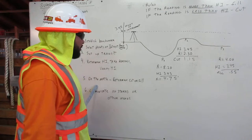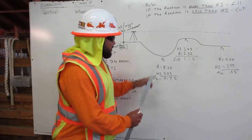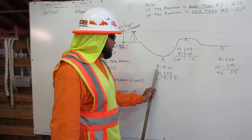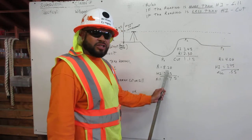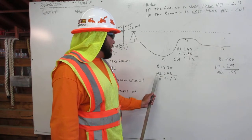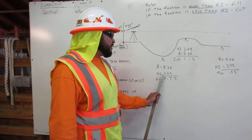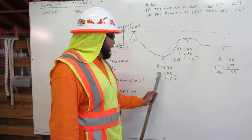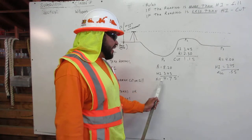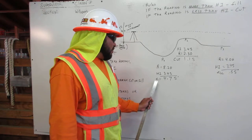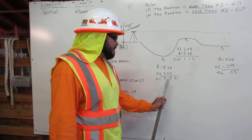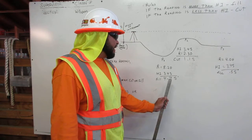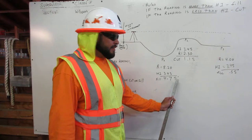Then we do the math. Our point of interest number one: our reading is 8.20 and our height of instrument is 3.45. The reading is more, so on this occasion we are going to have to fill. We do the math and we have to fill 4.75 feet.